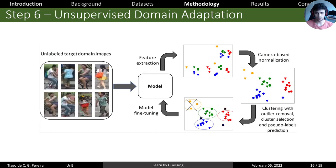Our full pipeline is here. We have a model pre-trained in the source domain, and we have a lot of unlabeled target domain images. We do feature extraction on all these images, then we do the camera-based normalization to align the output vector space, then we do our clustering with outlier removal, cluster selection, and pseudo labels prediction. Then we fine-tune our previously trained model on these pseudo labels, and we do this recursively until we reach full convergence.